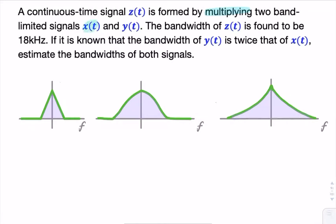Here, we are multiplying two signals, x and y, and we're being asked about the bandwidths of x and y, given that the bandwidth of the product is 18.